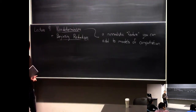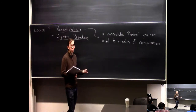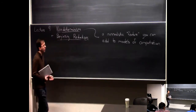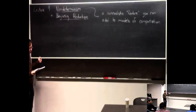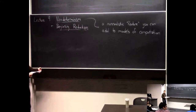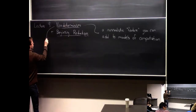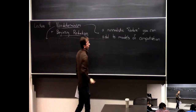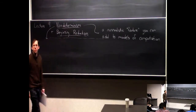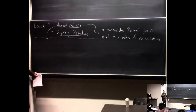So why do we study it if it's not realistic? Well, for analysis purposes. Somehow it helps us reason about regular computation to consider this magical non-determinism feature. I'm going to describe it in the context of pseudocode or just regular algorithm descriptions. Probably in the next homework I'll have you think about how you'd put it into Turing machines, but it's not very complicated, so I'll just describe it at a higher level today.